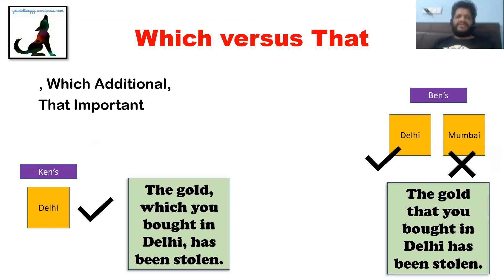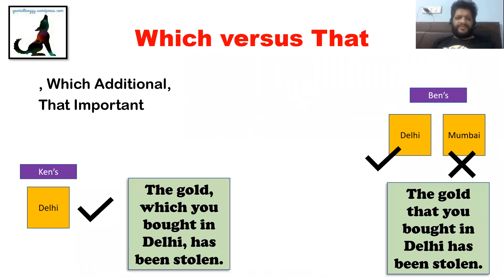The difference between 'which' and 'that' is that 'which' is used for something additional. An additional thing is one which, even if you remove it, will not hamper the meaning. For 'that,' if you remove that part, you actually hamper the meaning — the actual thought is not conveyed. The 'which' clause is always enclosed in commas, whereas the 'that' clause stands by itself without commas before or after.